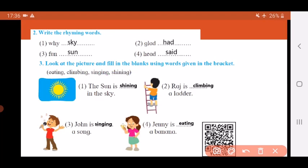Now let's look at the picture and read the sentence and then fill in the blanks. The first picture shows us a sun shining brightly in the sky. Let's read the sentence. The sun is dash in the sky. So which of these words will come in the blank? Shining. So write down: The sun is shining in the sky.